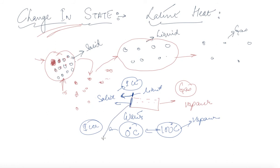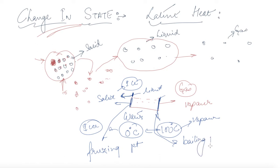The point where liquid starts to convert into solid is known as its freezing point. For water, that point is 0 degree Celsius. And when liquid starts to convert into gas, that temperature is known as its boiling point. These are the stages at which we can observe a particular substance and how they change their state.